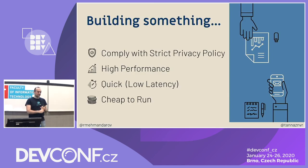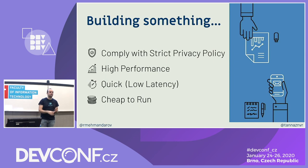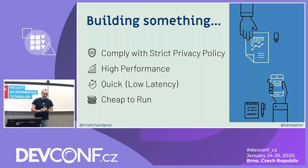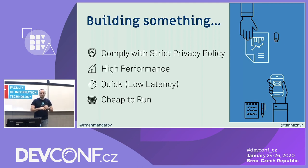The system must have a strict privacy policy — no names, identities, faces, or anything about people going in and out should be leaked. It must perform really well whether it's one person or a hundred people passing in front of a sensor or camera. It needs to be quick, so if anything happens you know fast. And it needs to be relatively cheap to run. Think about that while we spend a few minutes telling you about ourselves.